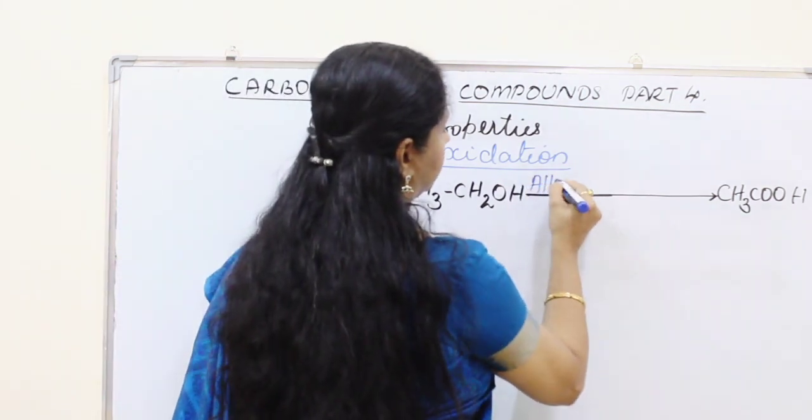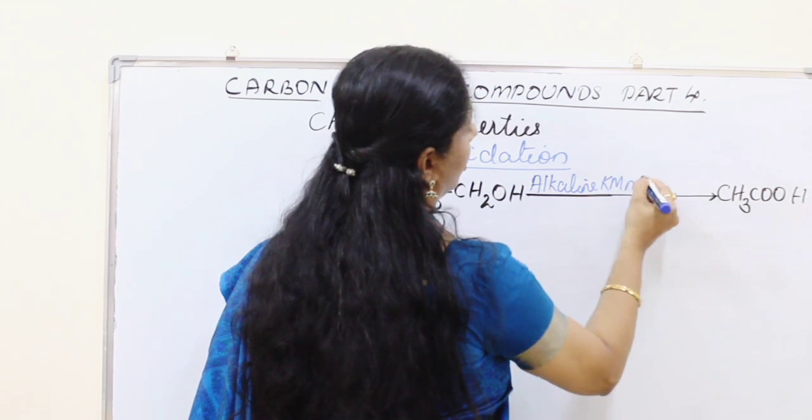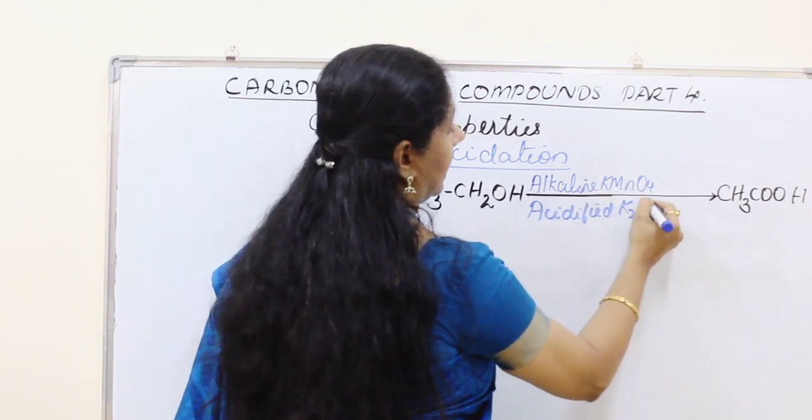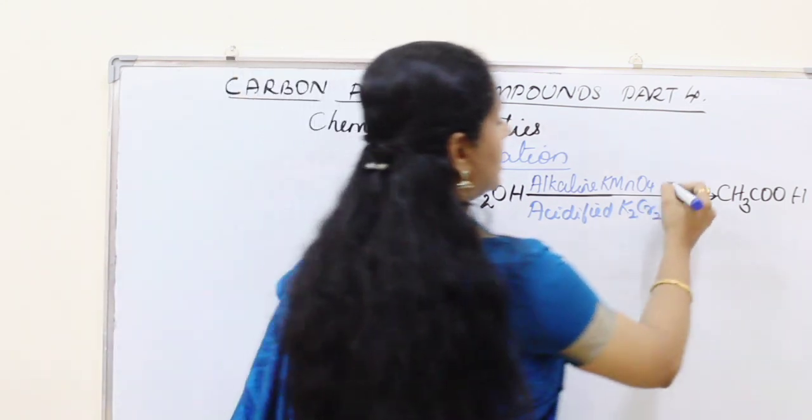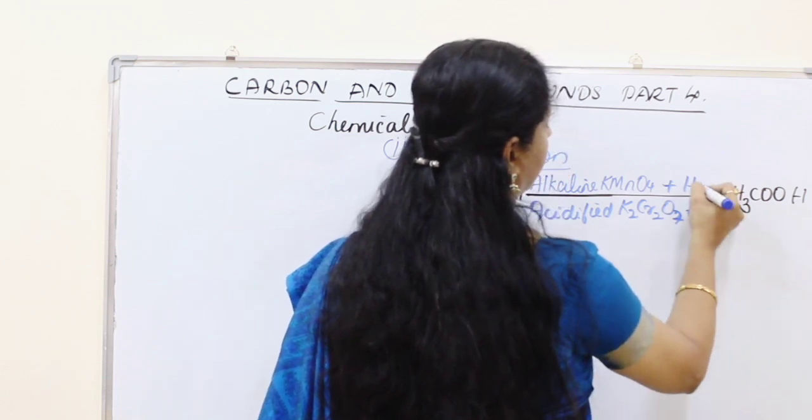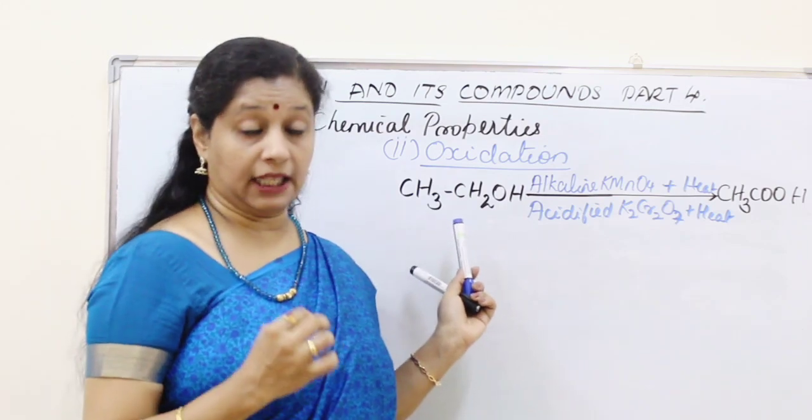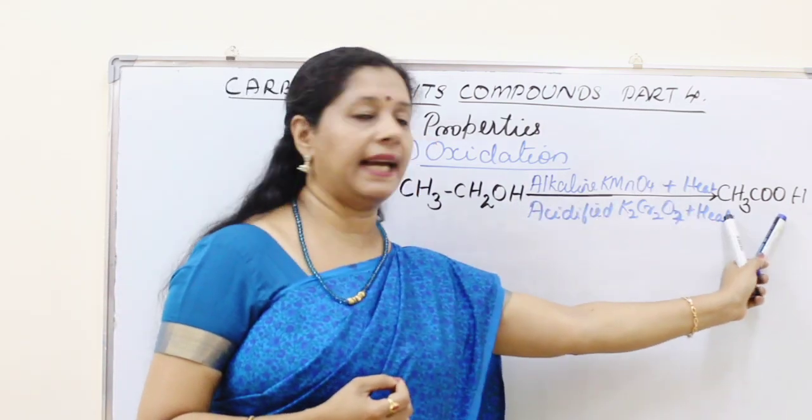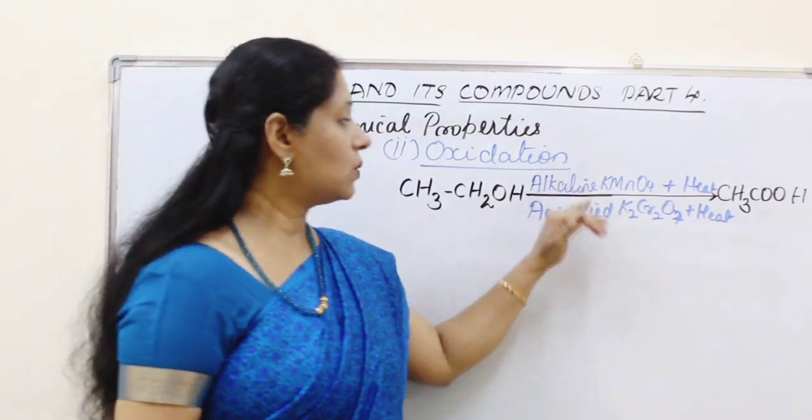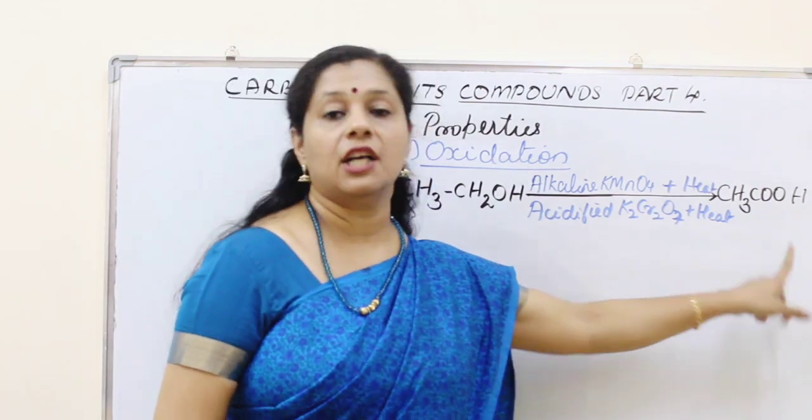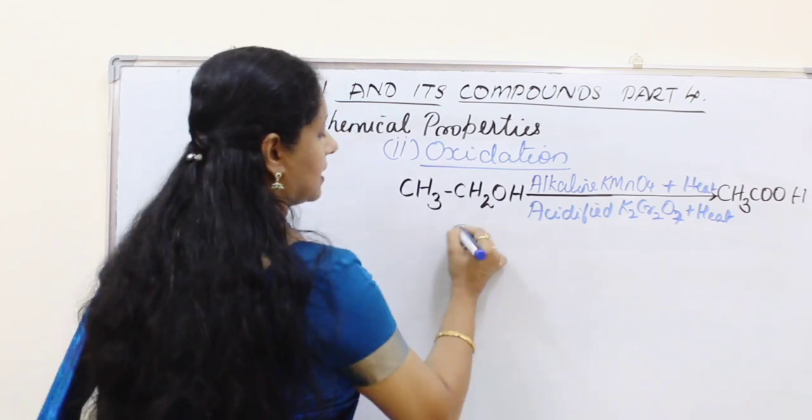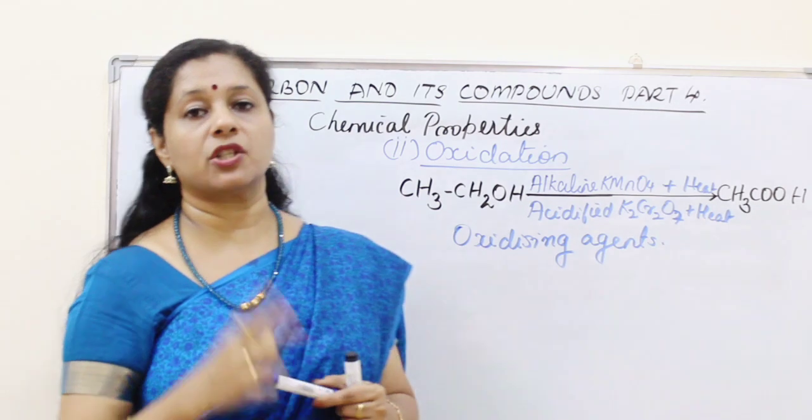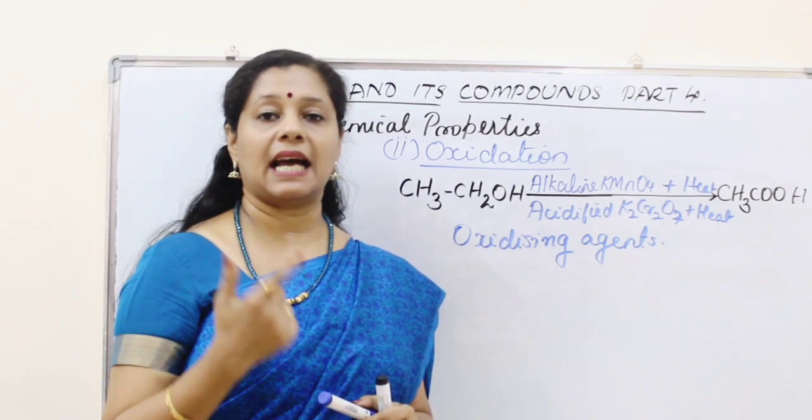So for this to happen, we need some substances to provide oxygen. They are alkaline KMnO4, that is potassium permanganate, or we can use acidified potassium dichromate K2Cr2O7. In both these cases, we have to heat. If you heat ethanol in presence of alkaline potassium permanganate or acidified potassium dichromate, this alcohol will turn into acid. This is called ethanoic acid. Here these two substances are actually providing oxygen for the alcohol to become acid. So such substances are called oxidizing agents. Substances which give oxygen for a reaction are called oxidizing agents. So here we are learning examples of two oxidizing agents: acidified potassium dichromate and alkaline potassium permanganate.